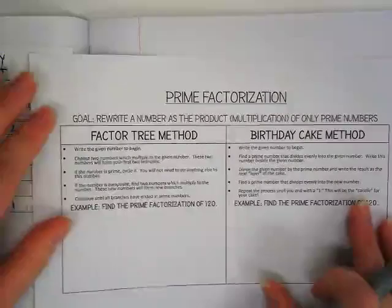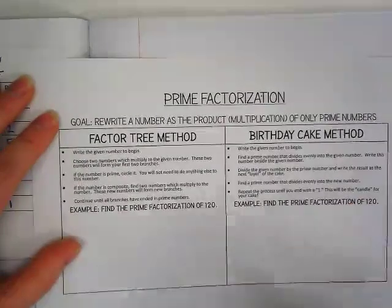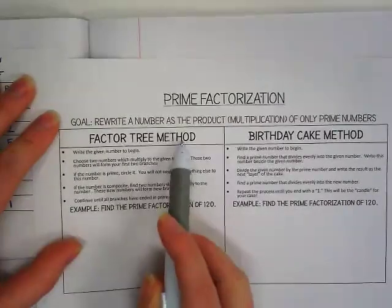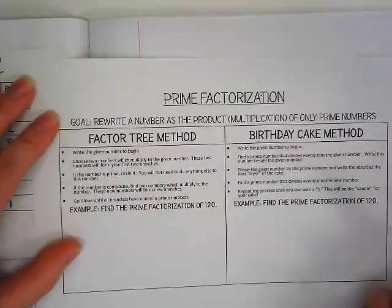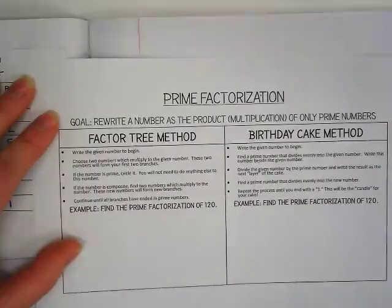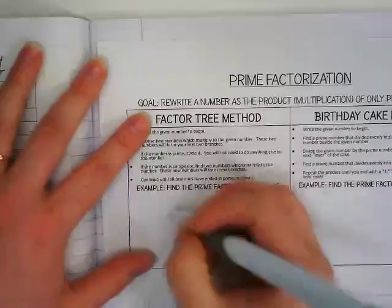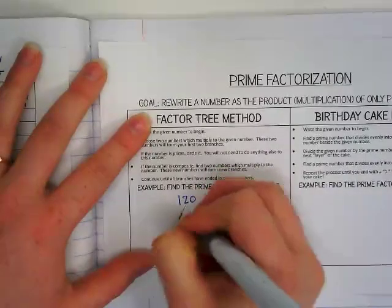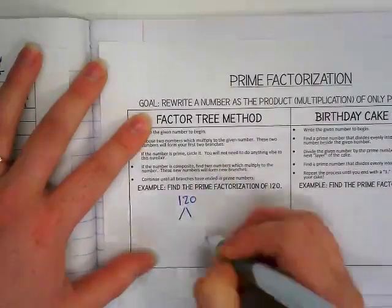Alright, so we saw in Flocab they used the factor tree method, which is a method that branches out into different factors and eventually breaks down completely.